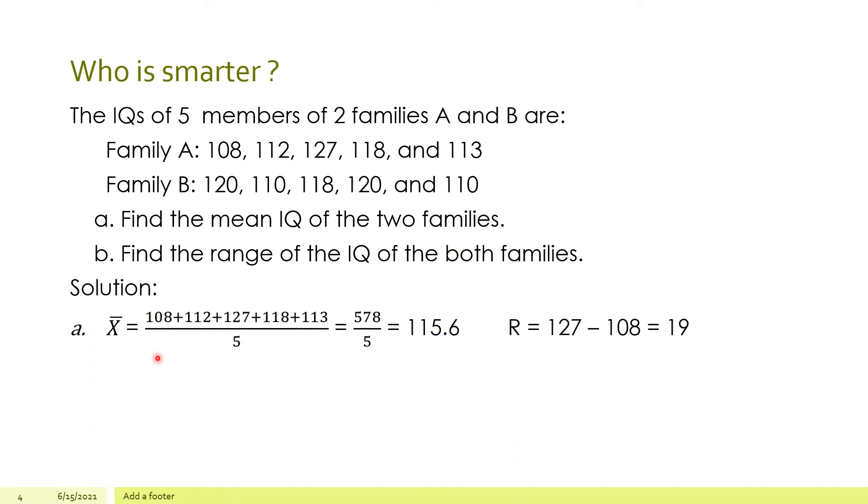So solution. To get the mean, we add the total is 578 divided by 5. So the mean is 115.6. And the range, 127 minus 108 is 19. While family B, the same total, 578 divided by 5 is 115.6. So they have the same mean. But the range, 120 minus 110 is 10.